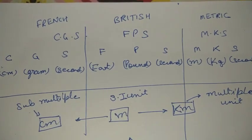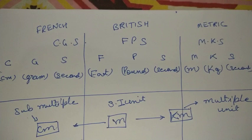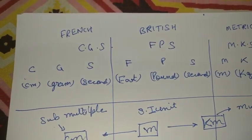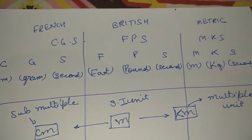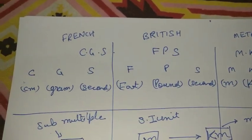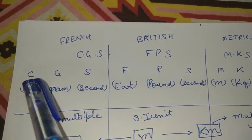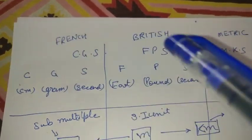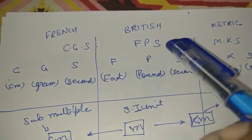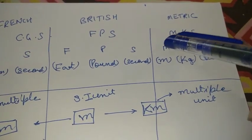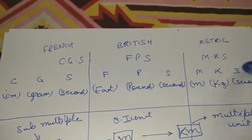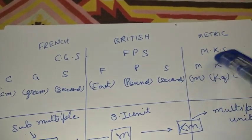The next topic is CGS, FPS, and MKS — three different standard systems used to measure physical quantities. CGS is a French system, FPS is British, and MKS is the metric system. In CGS: C stands for centimeter, G for gram, S for second. In FPS: F stands for foot, P for pound, S for second. In MKS: M stands for meter, K for kilogram, S for second. We basically use the MKS system for representation of any particular basic unit.